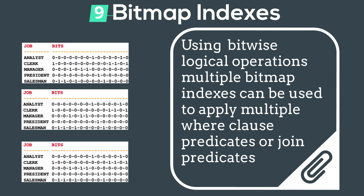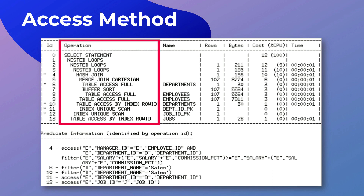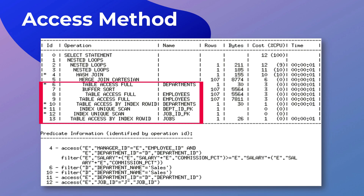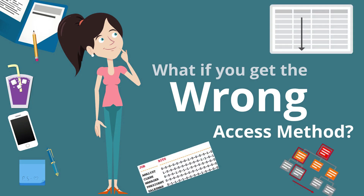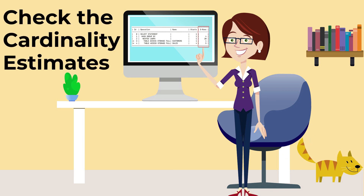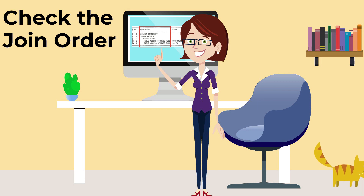So where do you find these access methods in the plan? You'll find them in the operations column of the execution plan. If you get the wrong access method, the first thing to look at is the cardinality estimate — if that's accurate, then look at the join order, because that may also influence the decision the optimizer is making for the access method.